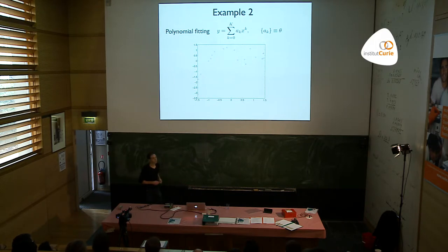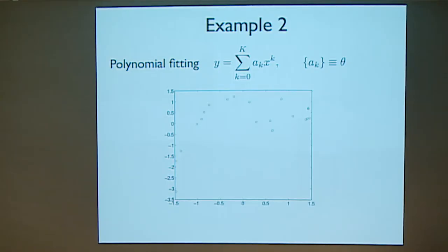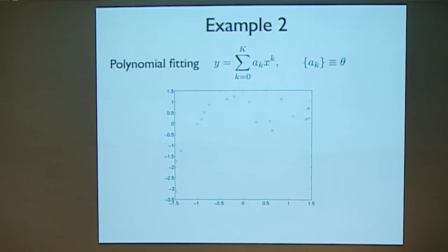Now let me move on to a second example which is also very simple: the fitting of a function. Let's say you have some data points (x, y) and you want to approximate these data points by a polynomial. You can put this into your favourite fitting program — in MATLAB, R, Python, or whatever. Here the parameters of the model are the coefficients of the polynomial, but also the degree of the polynomial.